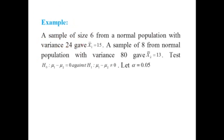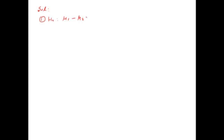Let us look at an example. A sample of size 6 from a normal population with variance 24 gave mean 15, and a sample of 8 from a normal population with variance 80 gave mean 13. Test the hypothesis that the difference of means is equal to 0 against the alternative that the difference of means is not equal to 0 at the level of 0.05. The null hypothesis is mu1 minus mu2 equals 0 — there is no difference between the means of two populations.